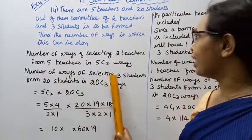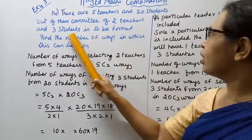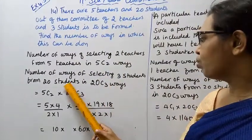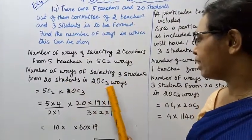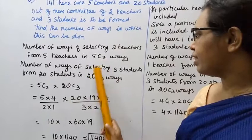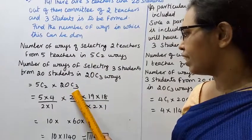Number of ways of selecting 3 students from 20 students is 20C3 ways. So the total number of ways is 5C2 multiplied by 20C3.